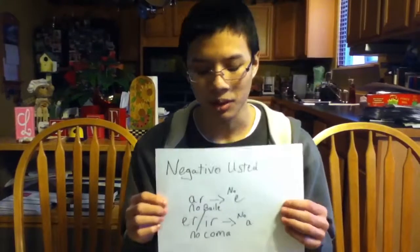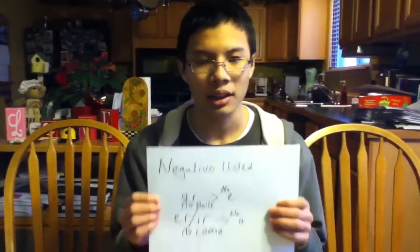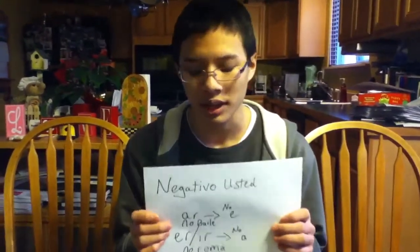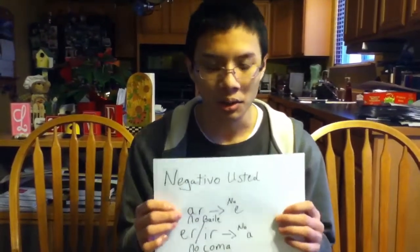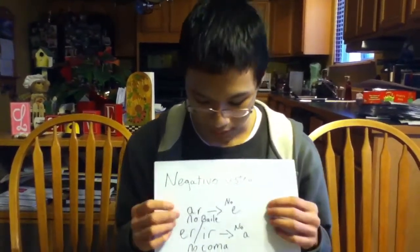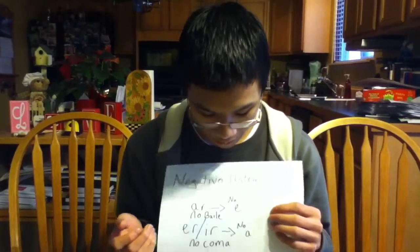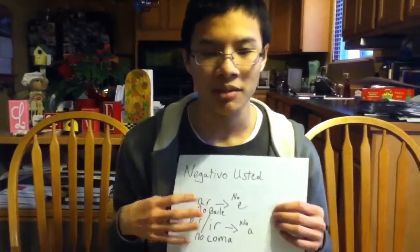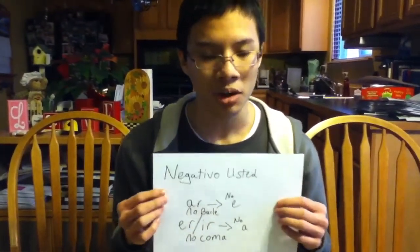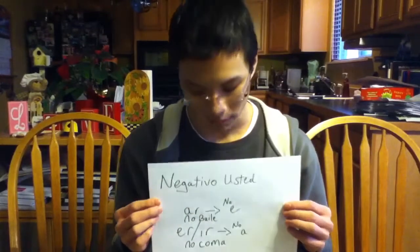To conjugate a usted negativo, conjugate in the yo form and do the exact same thing as the affirmative, but say no in front of the verb.